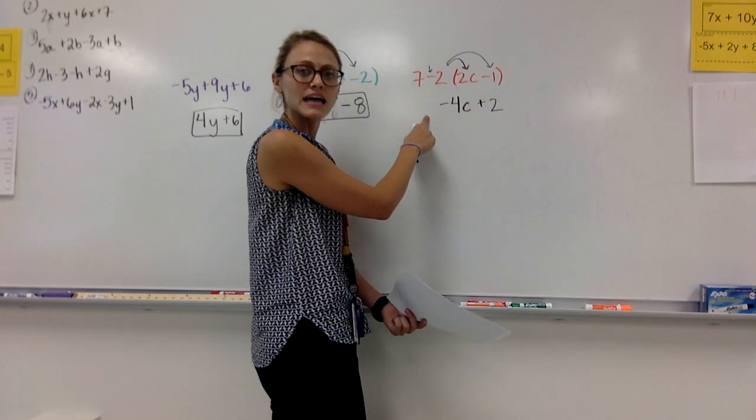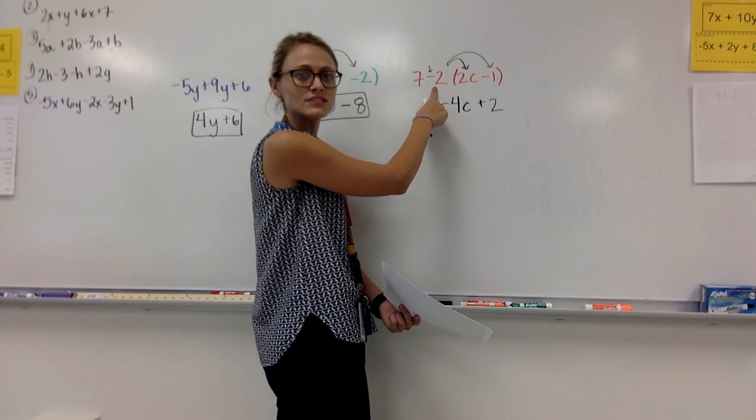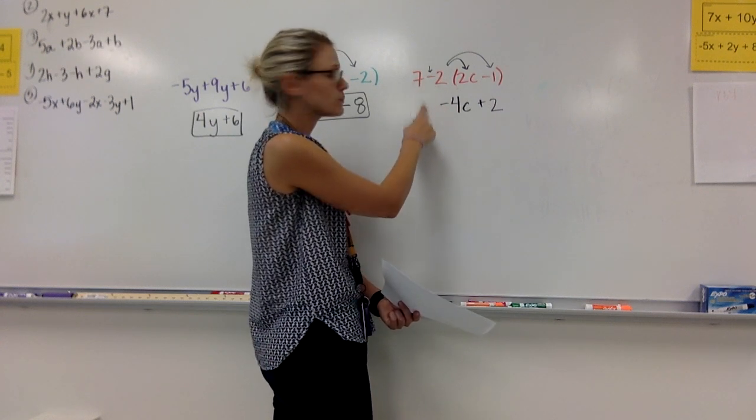I can now bring down the 7. I did not distribute the 7. It is not outside the parentheses. I simply bring it down.